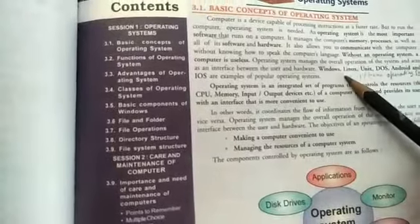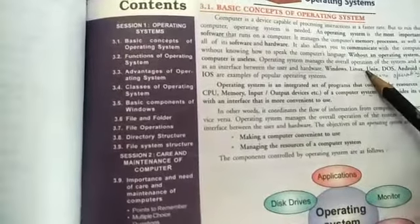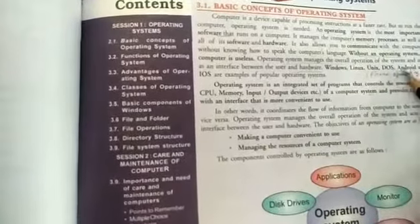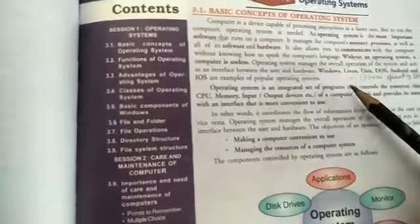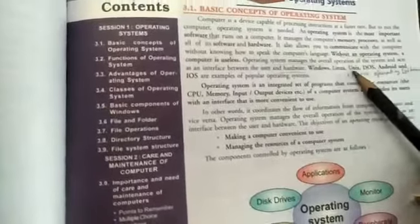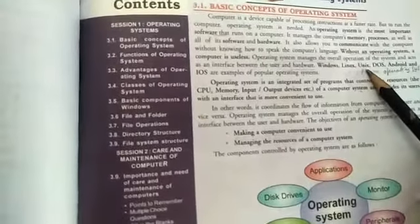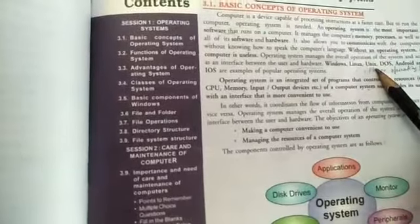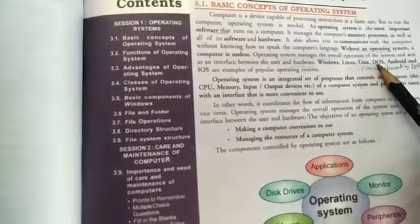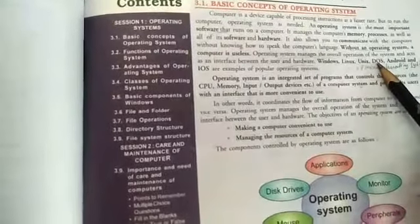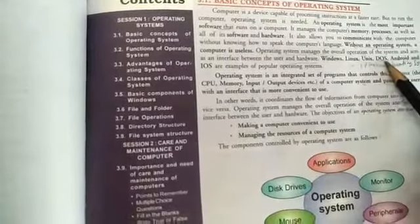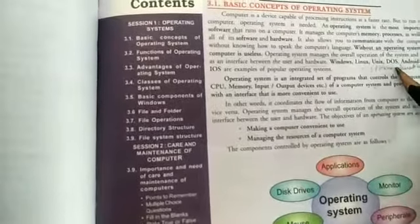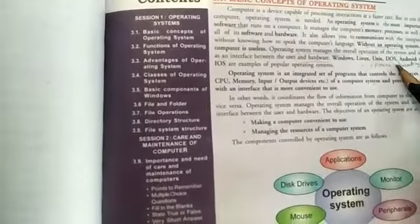Examples of operating systems include Windows, Linux, Unix, DOS, Android, and iOS. Linux and Unix are text-based operating systems — you cannot use a mouse with this type. DOS is a disk operating system. Android is used in phones, and iOS is the iPhone operating system. These are the popular operating system examples.